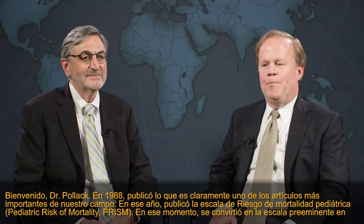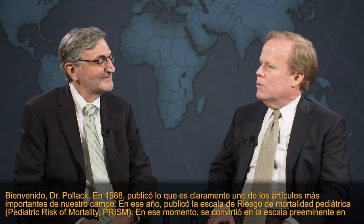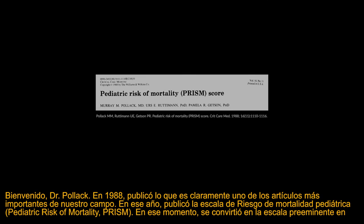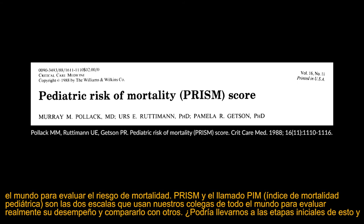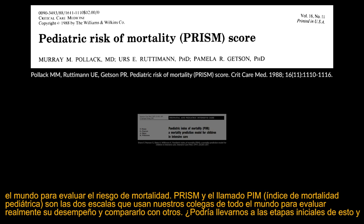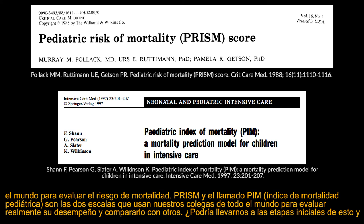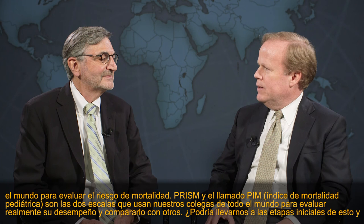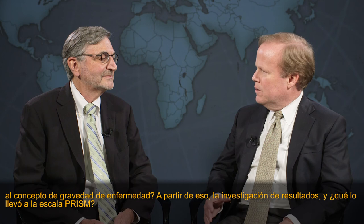Dr. Pollack, welcome. In 1988, you published what is clearly one of the landmark papers in our field — the pediatric risk of mortality score, PRISM. Across the world, it is now the preeminent score to assess the risk of mortality. That and the so-called PIM score, the pediatric index of mortality, are the two scores that colleagues around the world rely on to assess their performance and benchmark against others. Could you take us back to the early days of that severity of illness concept and what led you to the PRISM score?